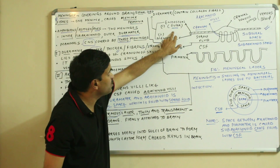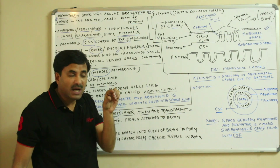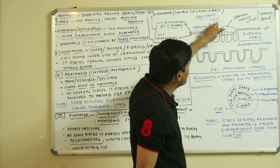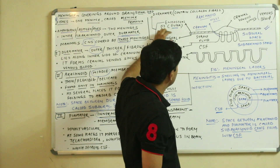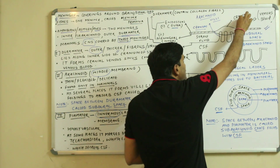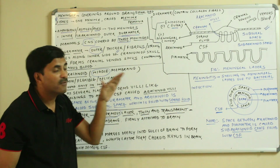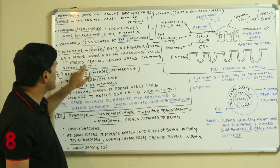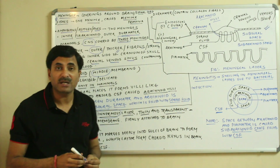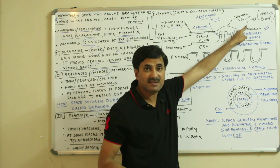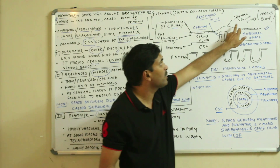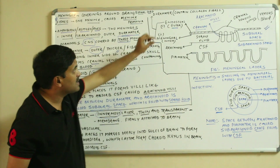The endosteal and meningeal layers of the dura mater are generally attached to each other, but at a few places there is a space between them. At these places, the separated layers form a cranial venous sinus, which is filled with venous blood. The role of the cranial venous sinus will be discussed further in videos about CSF circulation.